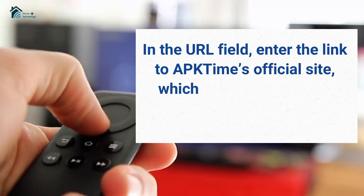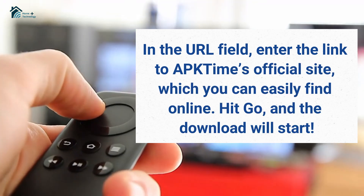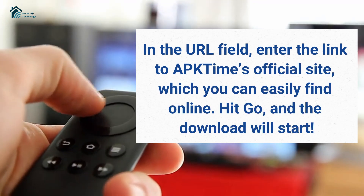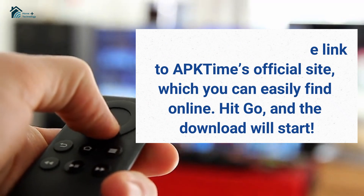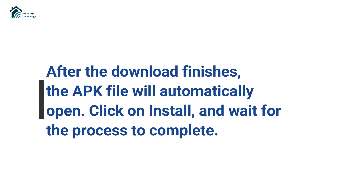In the URL field, enter the link to APK Time's official site, which you can easily find online. Hit Go and the download will start. After the download finishes, the APK file will automatically open.